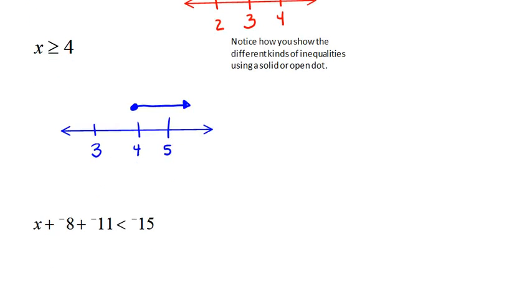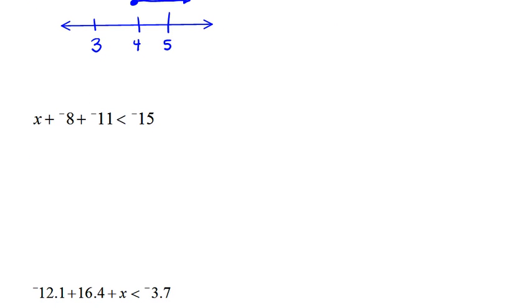Now let's apply this with a more complicated inequality. We have x plus negative 8 plus negative 11 is less than negative 15. The first thing we have to do here is to simplify our inequality. I have like terms on this side of the inequality. We solve it just like we would if this were an equal sign. So, x plus negative 8 and negative 11 gives us negative 19, which is less than negative 15.